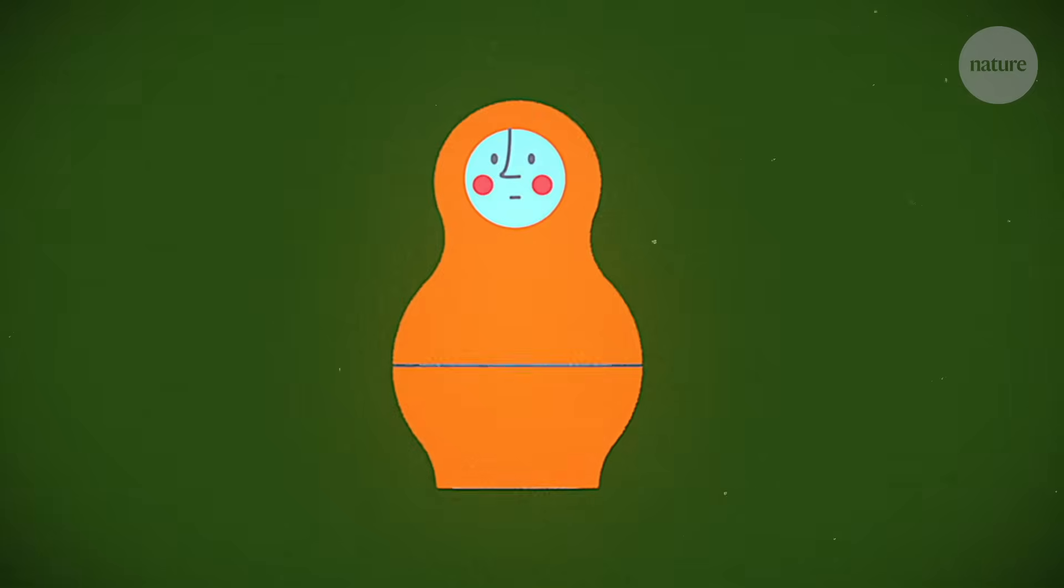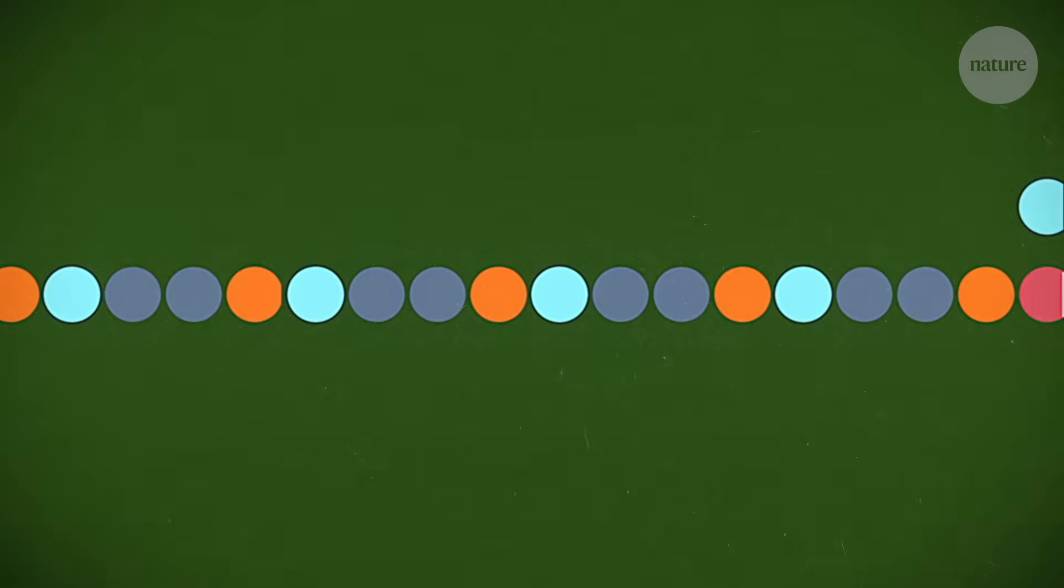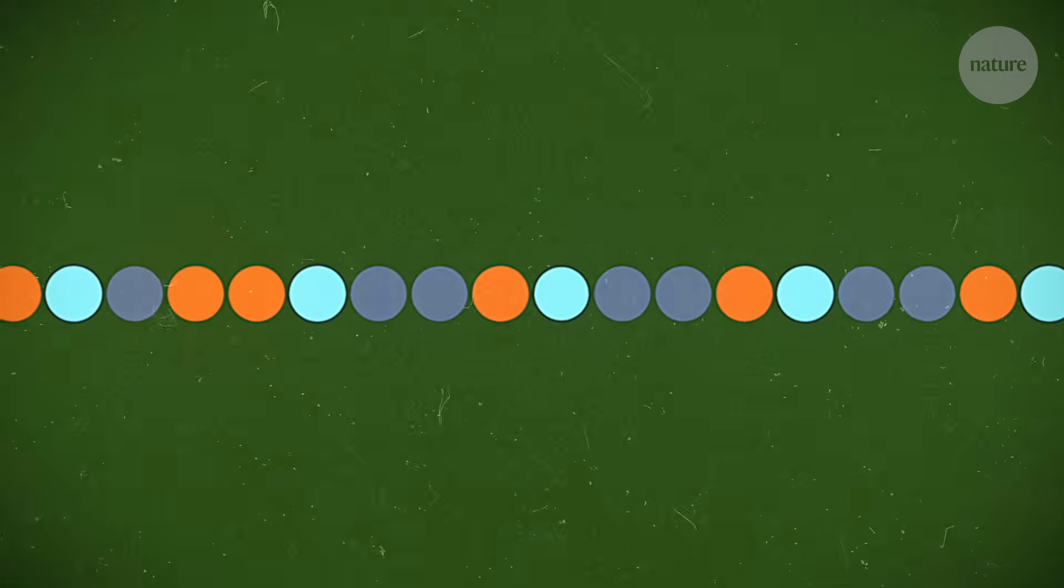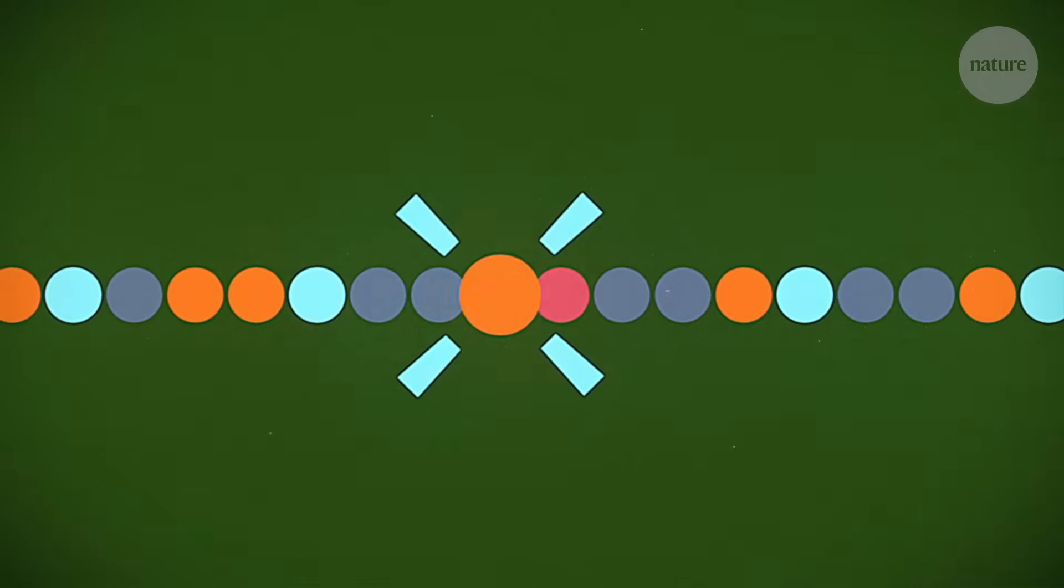And some of the mutations that we saw were in duplicated genes. So these are genes where we have extra copies. You can think of them as redundant copies. And we saw that these regions are actually changing more rapidly than their unique counterparts. If you think about it, it's not a bad evolutionary strategy, because if you have extra copies and you can tinker with them, you can actually create novelty more rapidly.